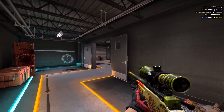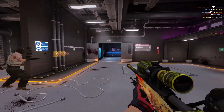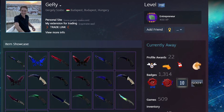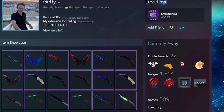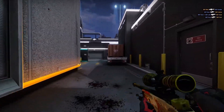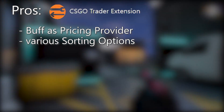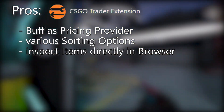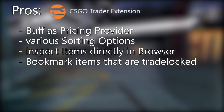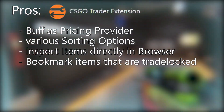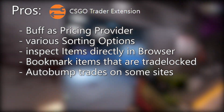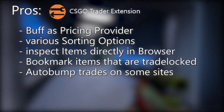The first plugin we want to look at is CSGO Trader by Gary. Gary is one of the biggest CSGO traders and also a developer, so it's not really a surprise that he made a plugin like this. All the plugins I'm covering are totally free. The pros compared to other plugins: Gary's plugin offers Buff as a pricing provider, it features various sorting options for inventory and markets, you can inspect items directly in your browser, and you can make bookmarks for items. It will also send a notification when a trade lock on an item has expired.